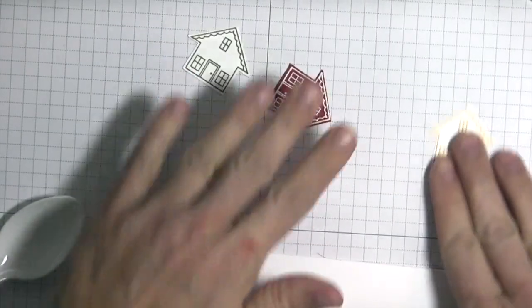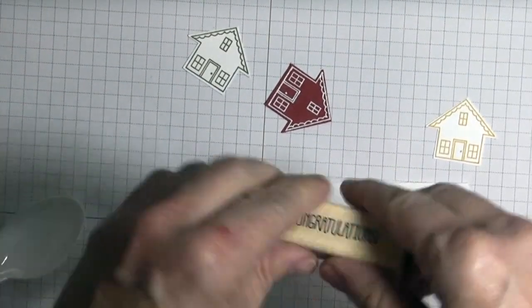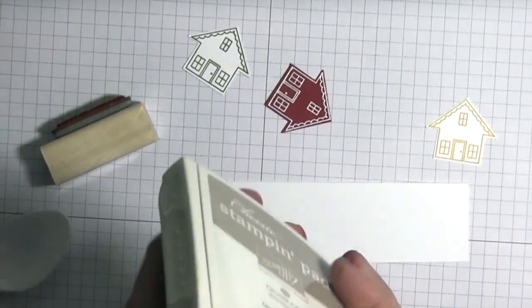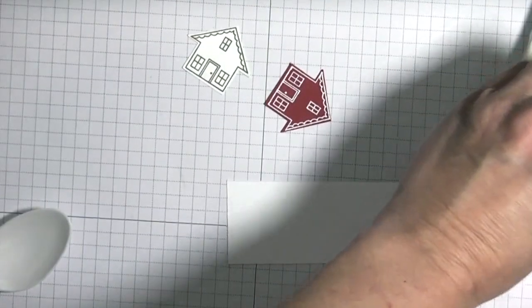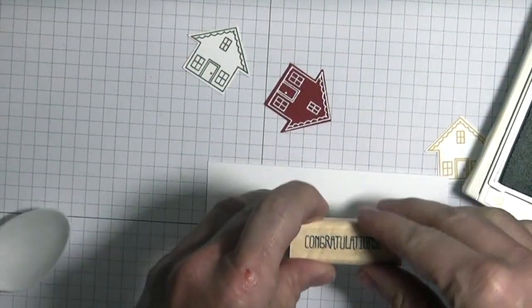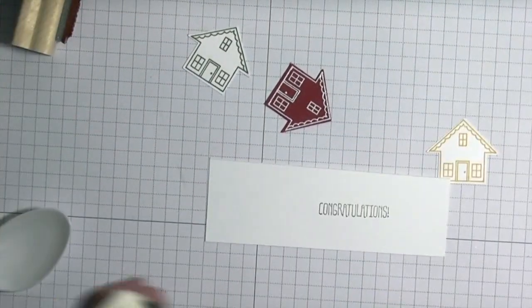The last thing you're going to do is take your congratulations stamp from the Something to Say stamp set, use your Crumb Cake ink and just a scrap of Whisper White, and just stamp it right there in the middle.